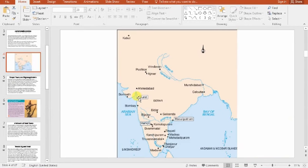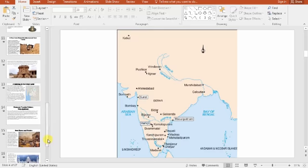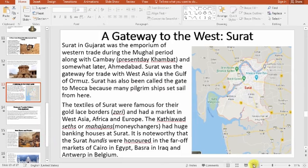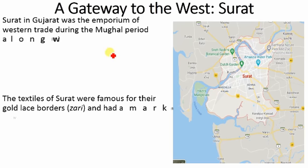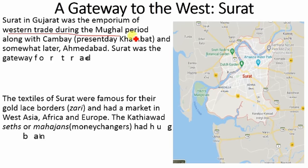You can see Surat's location on the map. All trade with the West and Europe passed through Surat — ships came from here. It became an important trading center, an emporium, meaning a great market and stock for different traders. This was the main center for western trade during the Mughal period.